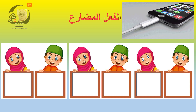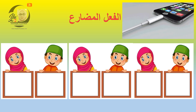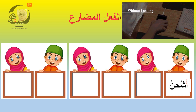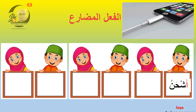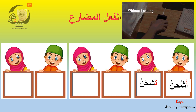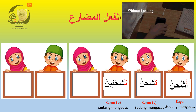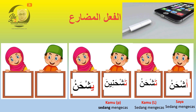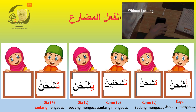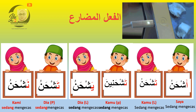Murid-murid, mari kita sama-sama ulang kaji pembelajaran pada hari ini. Bagi kata nama yang bersambung dengan fi'lul mudari'i: pertama, Ana — Ashhanu; kedua, Anta — Tashhanu; ketiga, Anti — Tashhanina; keempat, Hu'a — Yashhanu; kelima, Hia — Tashhanu; dan yang keenam, Nahnu — Nashhanu.